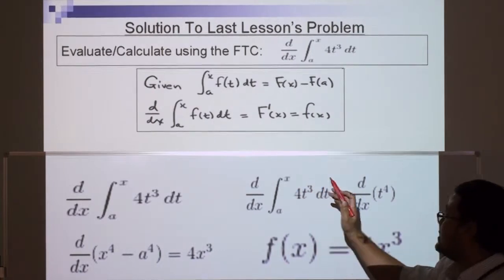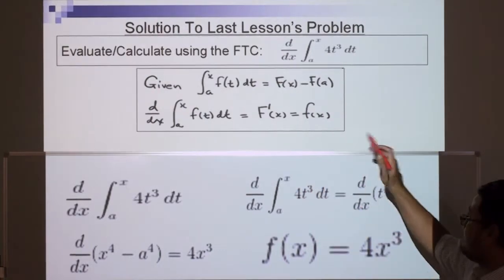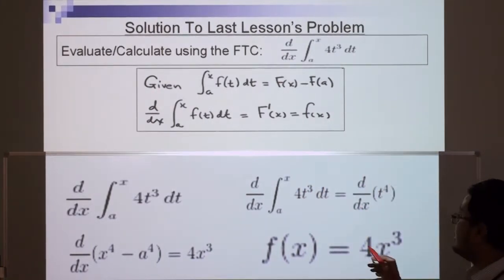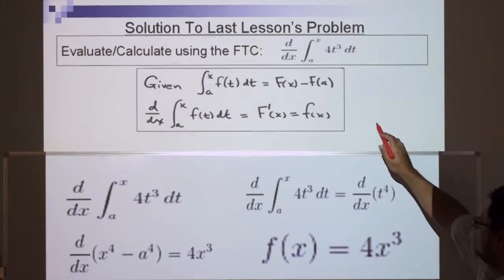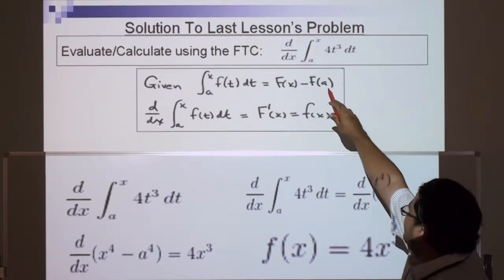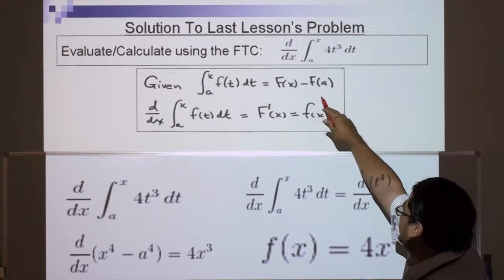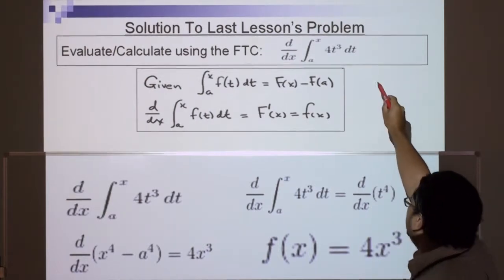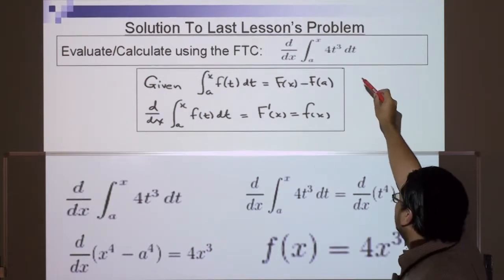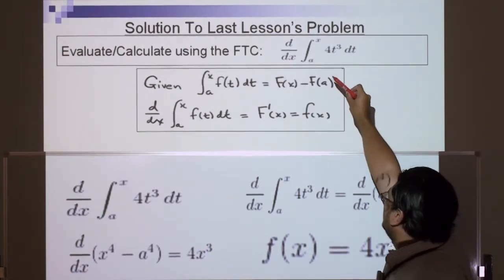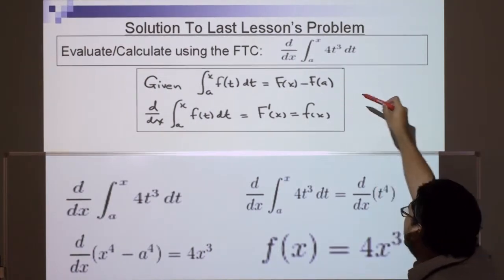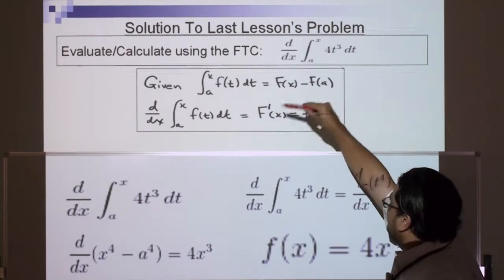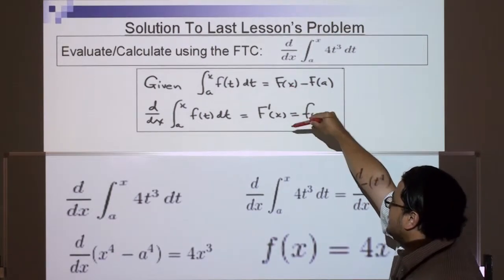Evaluate or calculate using the FTC, or Fundamental Theorem of Calculus. We're going to differentiate the integrand 4T³ with respect to T, where the upper limit is X and the lower limit is A. These are the two main parts — Formula 1 and Formula 2 — for the FTC.